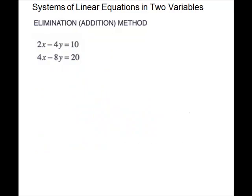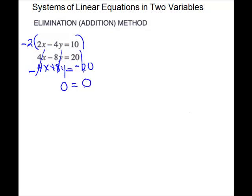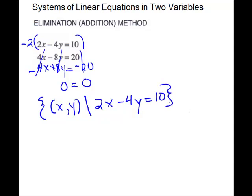We have one more system to look at. I'm going to multiply my first equation by a negative 2 to make the x's cancel. Multiplying through gives me negative 4x plus 8y equals negative 20. When I add together, my x's cancel, my y's cancel, and the constants cancel — just like our last one. So my solution set is the set of all ordered pairs x and y such that the first equation holds, and that is my solution set.